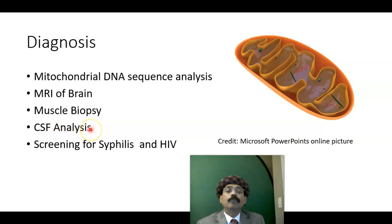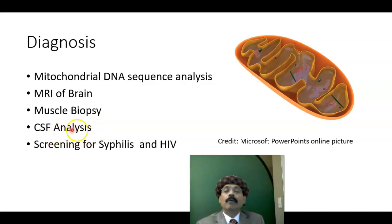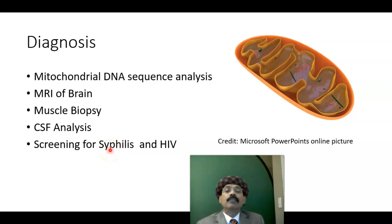CSF analysis is done to rule out other diseases such as toxoplasmosis, meningitis, syphilitic changes, or tubercular changes in the CSF. Screening for syphilis is important using the VDRL test — the Venereal Disease Research Laboratory test — or the RPR test. HIV screening is also important.